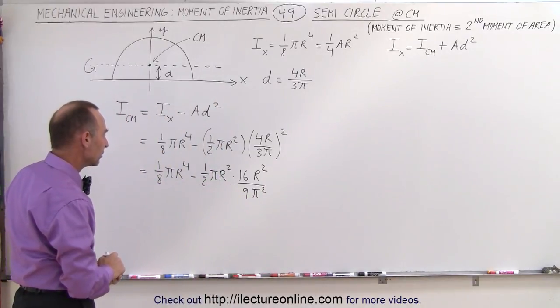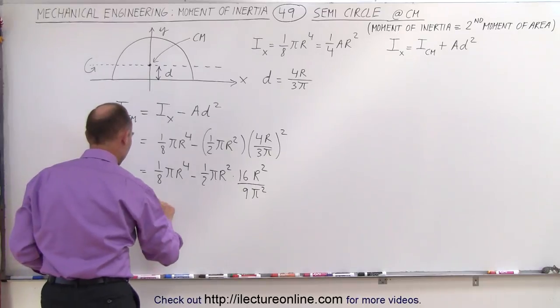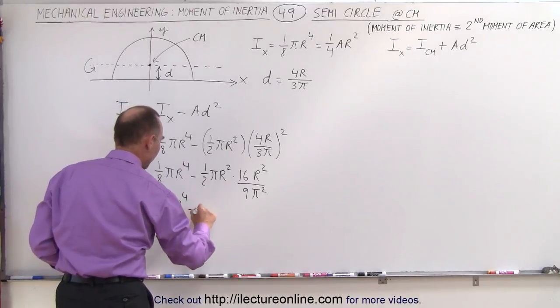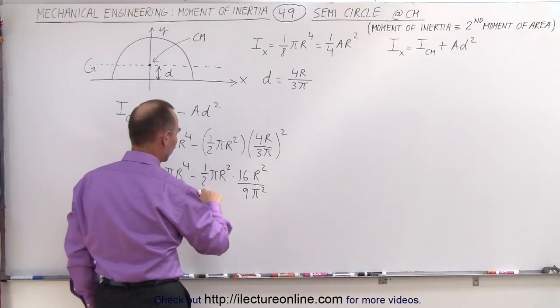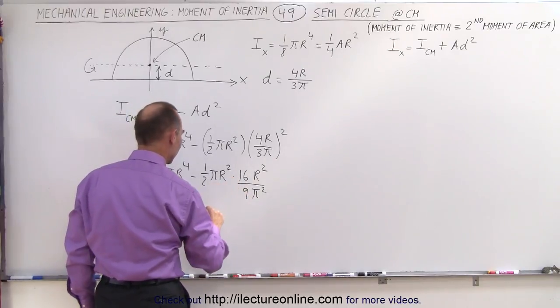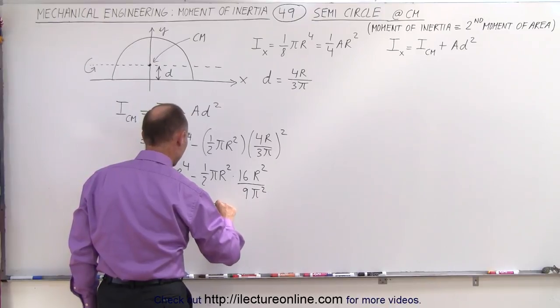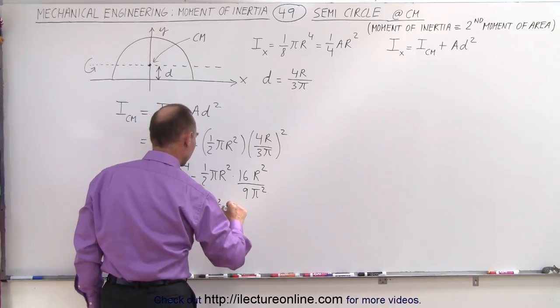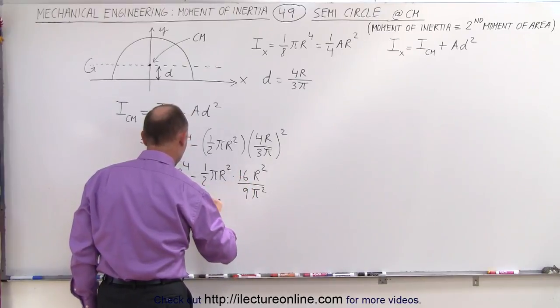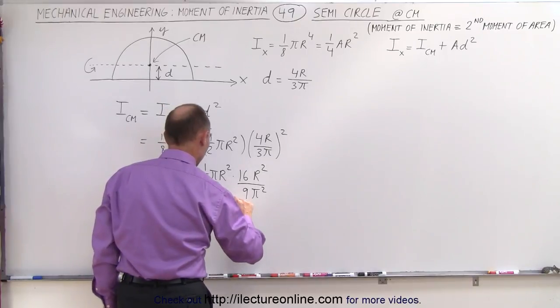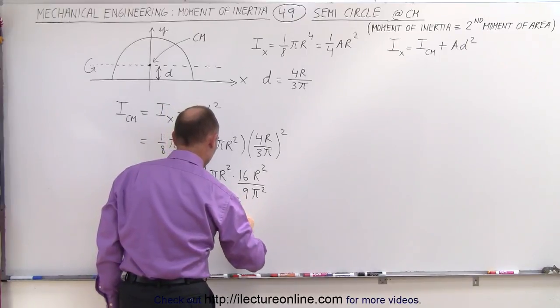This is equal to 1/8 pi r to the fourth minus, so we have 2 goes into 16, 8 times, so we end up with pi r squared times 8 over 9, times r squared divided by pi squared.